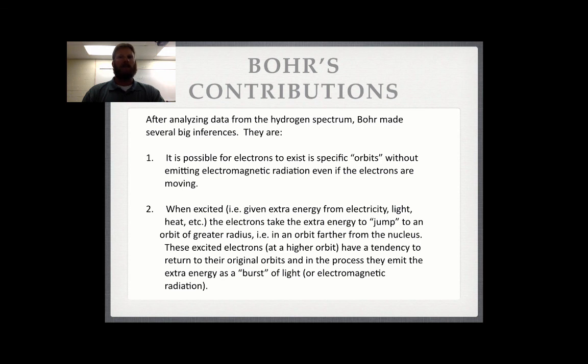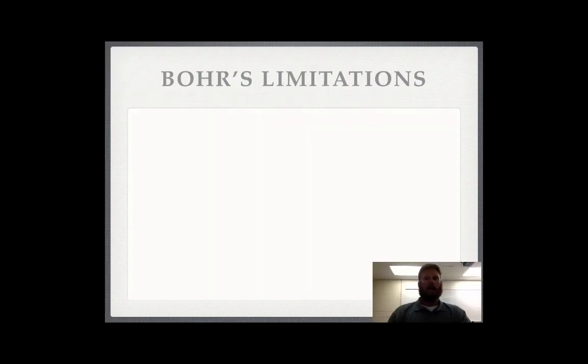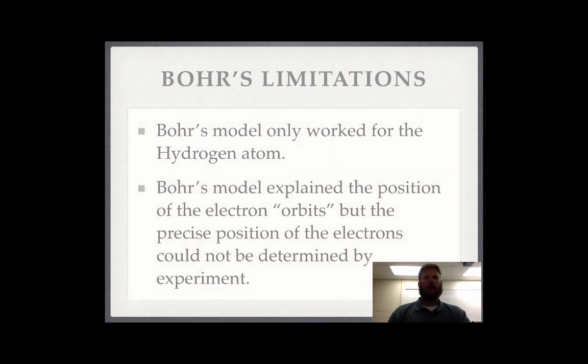Bohr's model provided the specific orbits of the electrons. Now, Bohr's model comes with a pretty big limitation. His model only worked for the hydrogen atom. Also, Bohr was able to define the orbits of electrons, but he still could not explain exactly where an electron is in its orbit. He was still thinking of an electron as a particle when he should have been considering the wave-like nature of electrons.